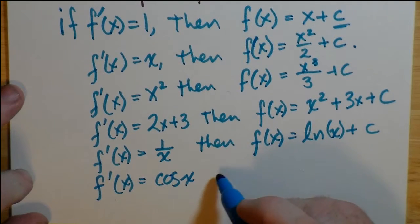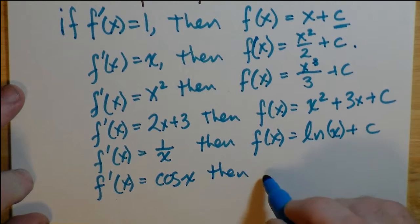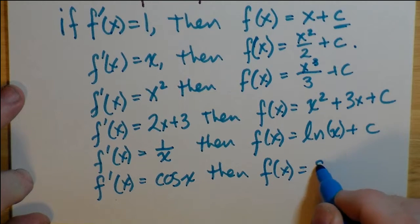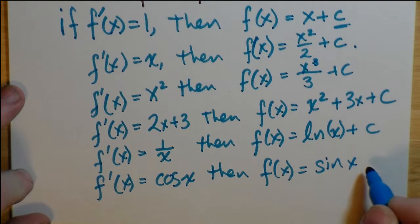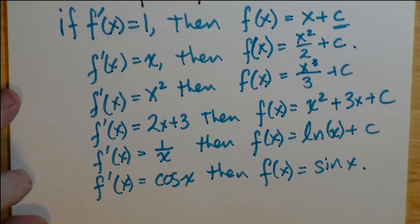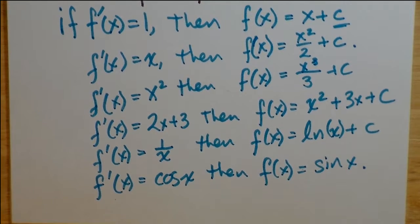And finally, if f'(x) is the cosine of x, then its anti-derivative becomes the sine of x, reversing that differentiation. I should write plus c on that.